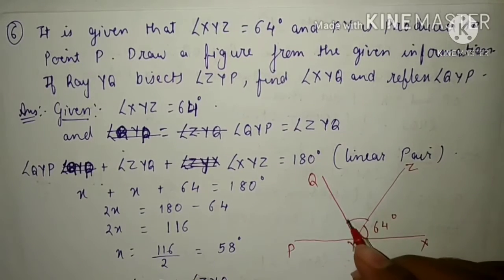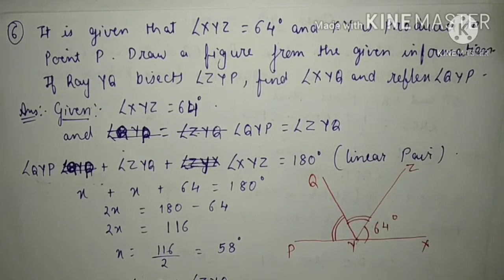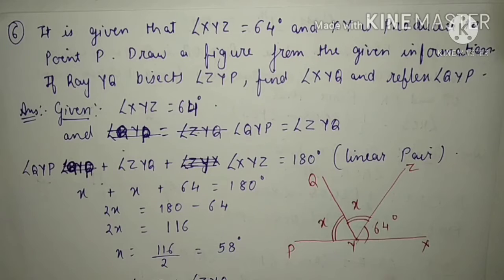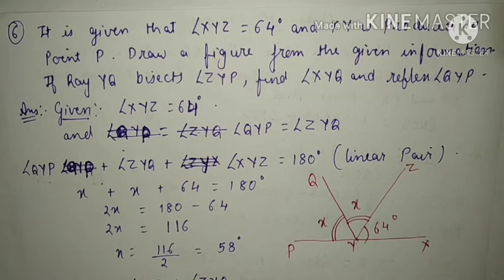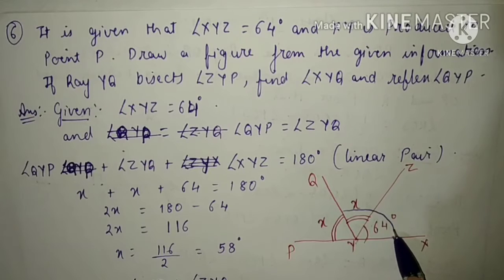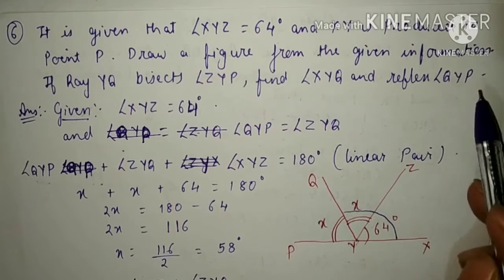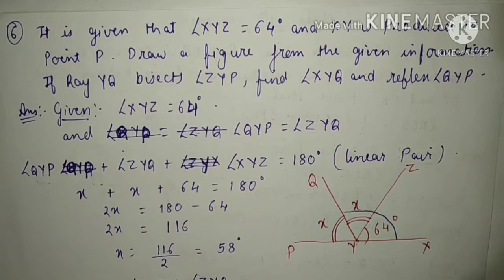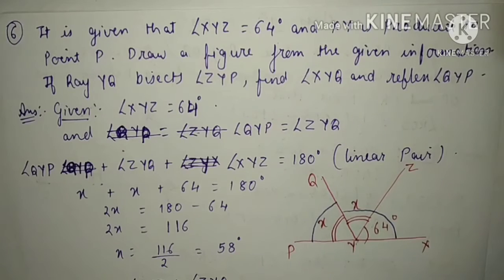That means this angle and this angle will be equal, so suppose they are x and x. Now we have to find angle XYQ — that means we have to find this angle — and the reflex of angle QYP. We have to find the reflex of this angle.